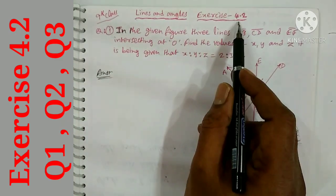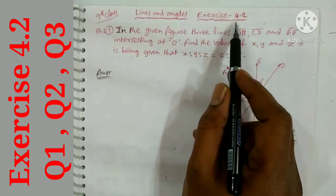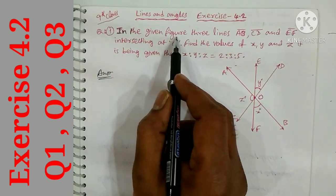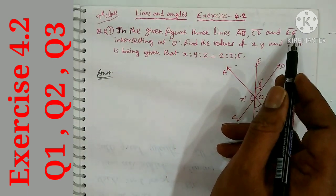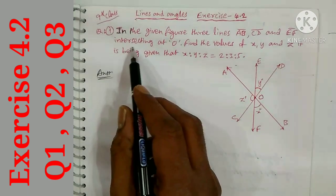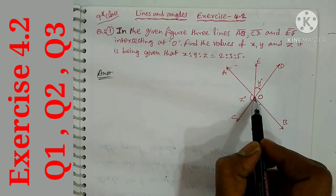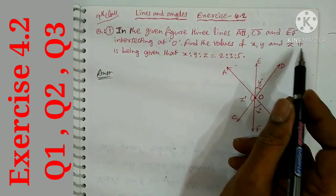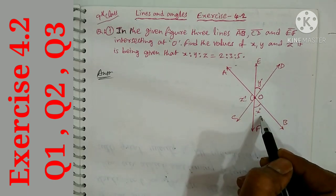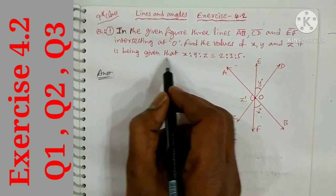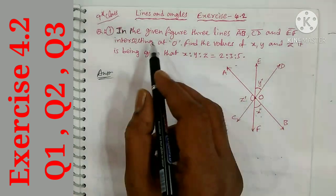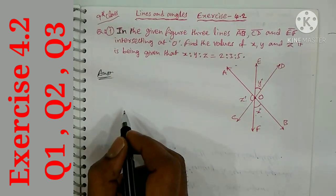9th class Lines and Angles Exercise 4.2. In the previous video we finished 4.1. Question number 1: In the given figure, three lines AB, CD, and EF are intersecting at O. Find the values of x, y, and z. It is given that x:y:z = 2:3:5, so we can assign angles accordingly.